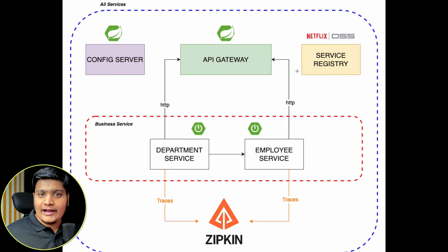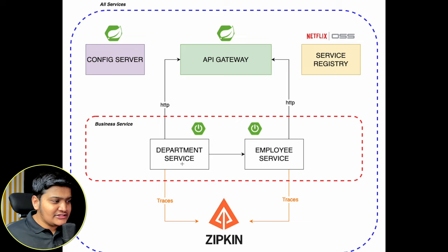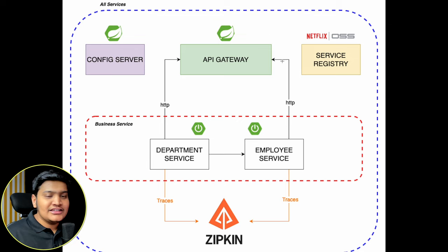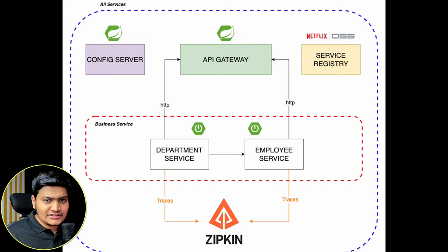The next thing is the API Gateway — it is the gateway for every public request coming to your architecture. Rather than calling Department Service or Employee Service directly, all public APIs are exposed via the API Gateway. Every request must come through the API Gateway, which decides which service to route it to. Within the API Gateway we can also add security, so all requests must be secured before going to the different services.